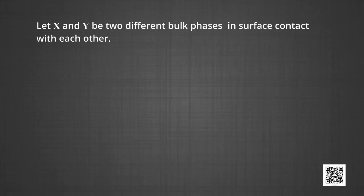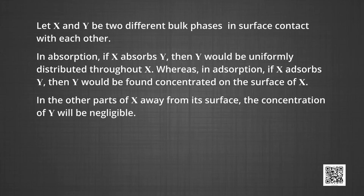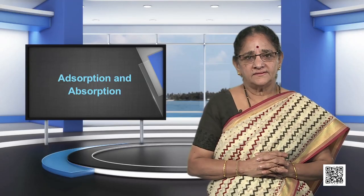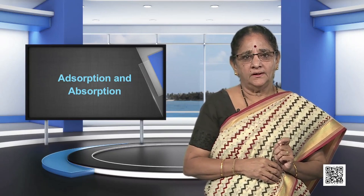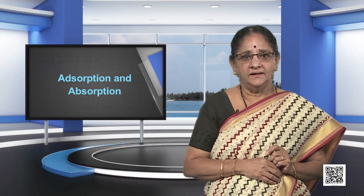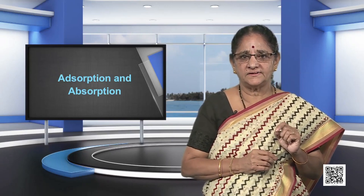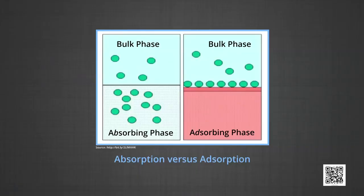Let X and Y be two different bulk phases in surface contact. In absorption, if X absorbs Y, then Y would be uniformly distributed throughout X. Whereas in adsorption, if X adsorbs Y, then Y would be found concentrated on the surface of X, and in other parts of X away from its surface, the concentration of Y will be negligible. Water vapors are absorbed by anhydrous calcium chloride but adsorbed by silica gel. In adsorption, the concentration of adsorbate increases only at the surface, while in absorption, the concentration is uniform throughout the bulk.